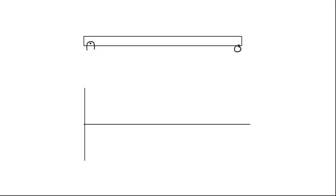This is a way to draw shear diagrams for five common cases that you generally see. The first case, a real classic one, is a simply supported beam where it's pinned on the left side and there's a roller on the right side, and we have something like a 200-pound force acting right down the middle of it. That's supported by the pin on the left and the roller on the right, and by symmetry we can say each reaction is equal to 100 pounds.